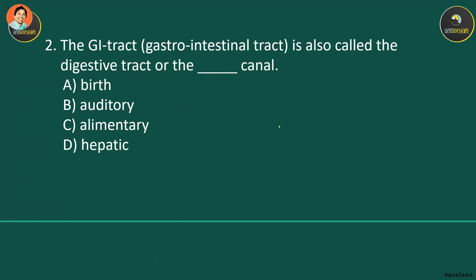The gastrointestinal tract is also called the digestive tract or the blank canal — A, B, C, or D. The GI tract is not the birth canal, not the auditory canal, and not the hepatic canal. The correct answer is alimentary canal.